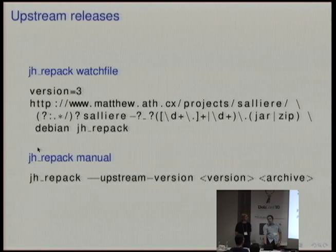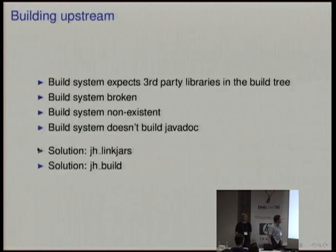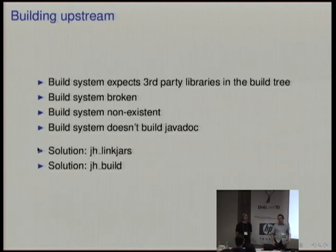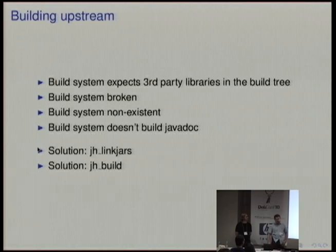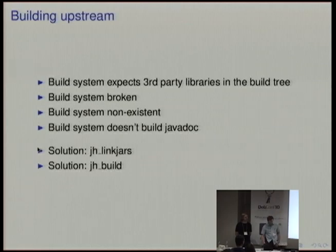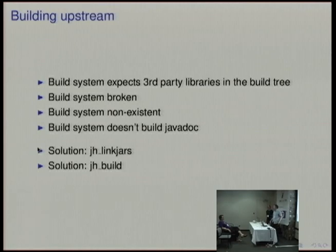Once you've got your upstream tarball, there may be some things wrong with the build system. The first problem is that if you've stripped out all the third-party libraries, the build system is still going to expect them in the tree rather than in usr/share/java. The build system might not actually work — sadly more common than you'd like — or it might not even exist. There are a lot of Java upstreams where they ship Java files and say compile them, without giving you any build system. The build system also might not produce Javadoc, which we would like all libraries to provide. So there are a couple of tools to help with these problems.